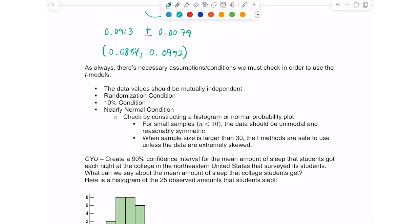So we need to check the nearly normal condition, and one of the ways you can do this is by checking a histogram or a normal probability plot, which we talked about in previous videos. For small samples, like if the sample size is less than 30, the data should be unimodal and reasonably symmetric. When the sample size is larger than 30, the t-methods are safe to use unless the data are extremely skewed.